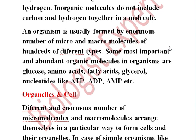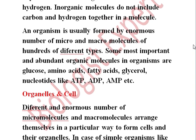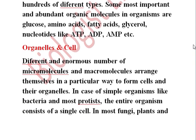The next level is the organelle and cell level. Different enormous numbers of micro and macromolecules arranged in a particular way form a cell. Organelles are structures present in the cell that perform a specific function — subcellular structures present in the cell are called organelles. In the case of simple organisms like bacteria and most protists, the entire organism consists of a single cell.